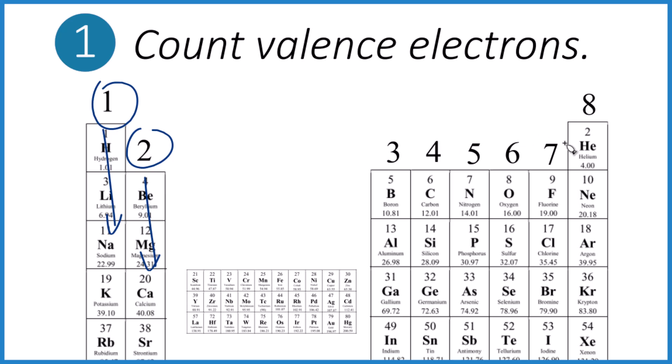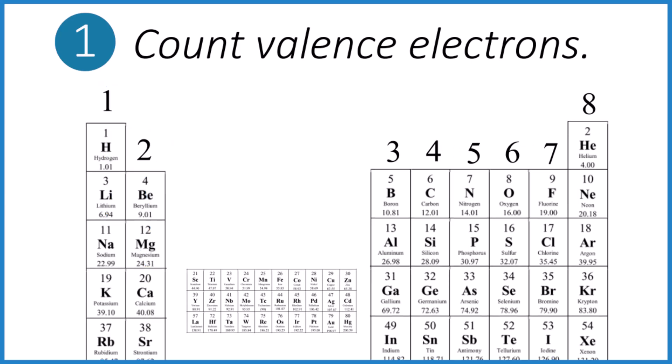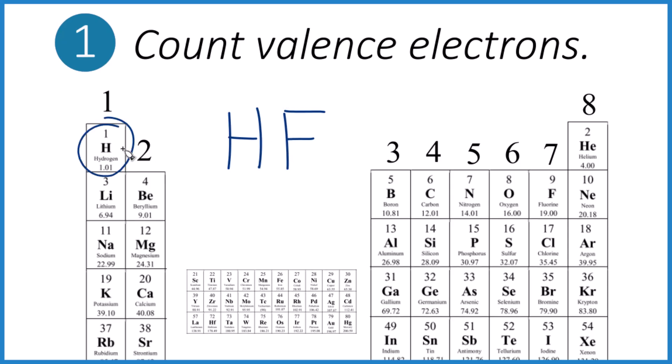Three, four, five, six, seven, and eight. So for something like HF, hydrogen, fluorine, one plus seven is eight. Eight valence electrons for the HF molecule.